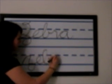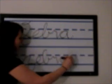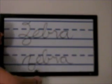Now let's do this with the lowercase letter Z. Starting at the bottom line, come up, slant down, round with your tail, your letter E, your letter B, your R, and finally your A. There you go, you have the word Zebra.